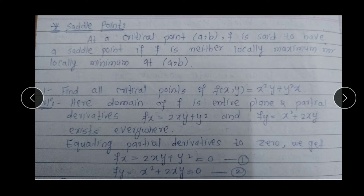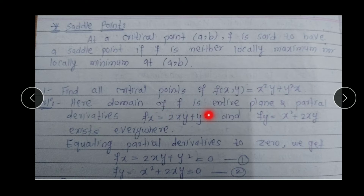Next, through an example we see how to find extreme values. First example: Find all critical points of F(x,y) = x²y + y²x. First we find the domain of F. Since this value of F exists at every point — at 0, positive real numbers, negative real numbers — the domain becomes the entire plane, because F's value exists at every point of the plane.